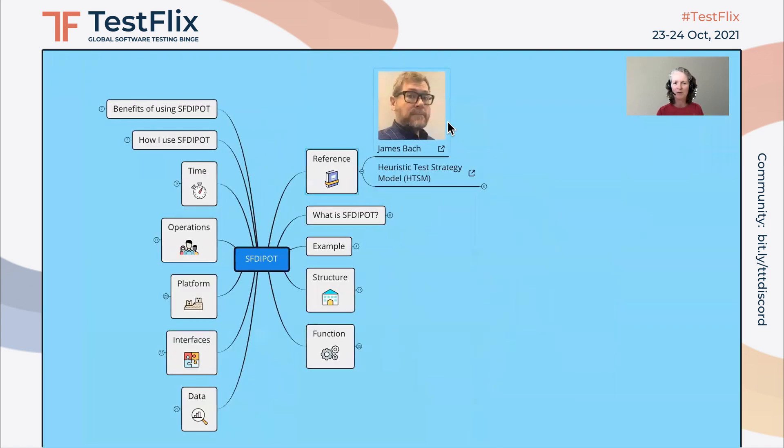San Francisco Depot comes from James Bach. It was designed by him originally as part of his heuristic test strategy model.